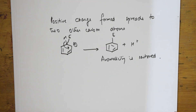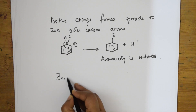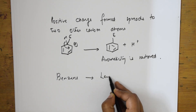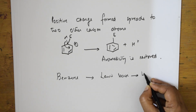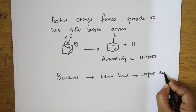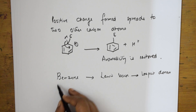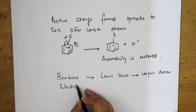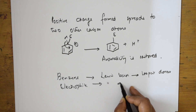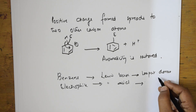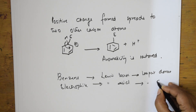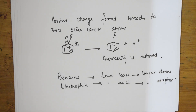In this mechanism, benzene is acting as a Lewis base — a lone pair donor — while the electrophile is acting as a Lewis acid, which is a lone pair acceptor. This completes the mechanism of electrophilic substitution.